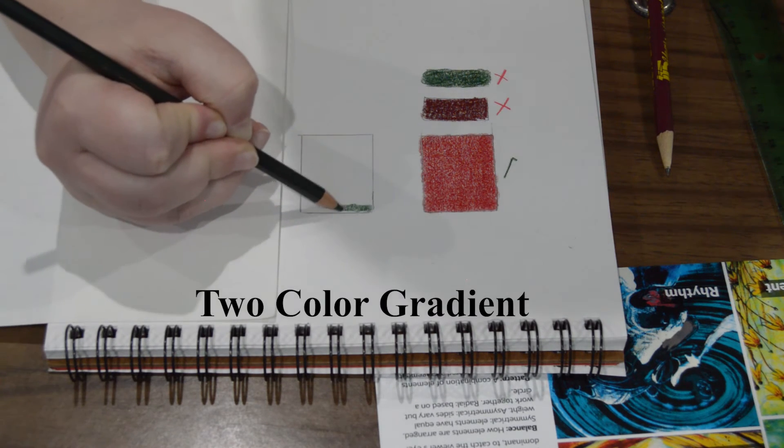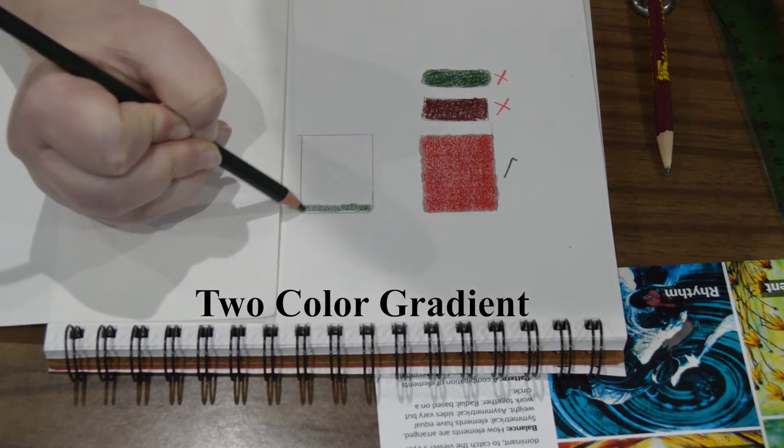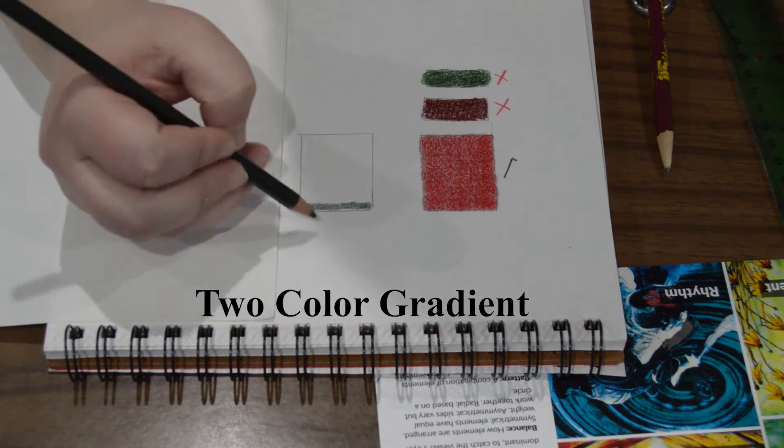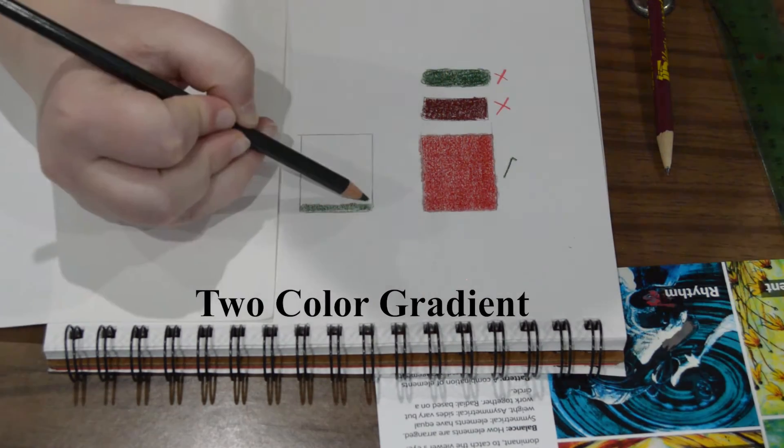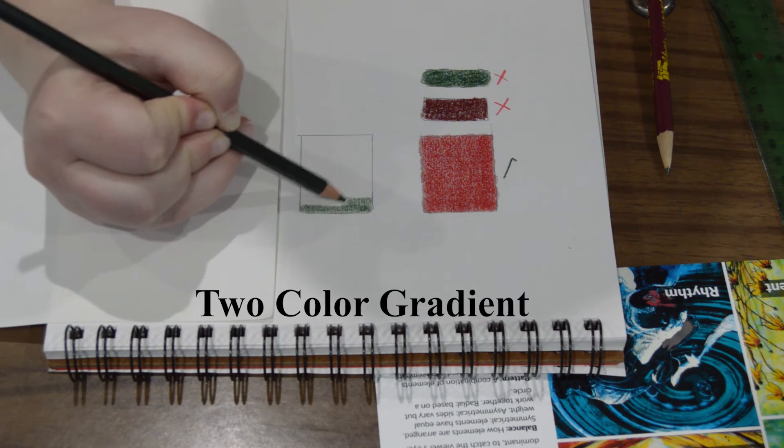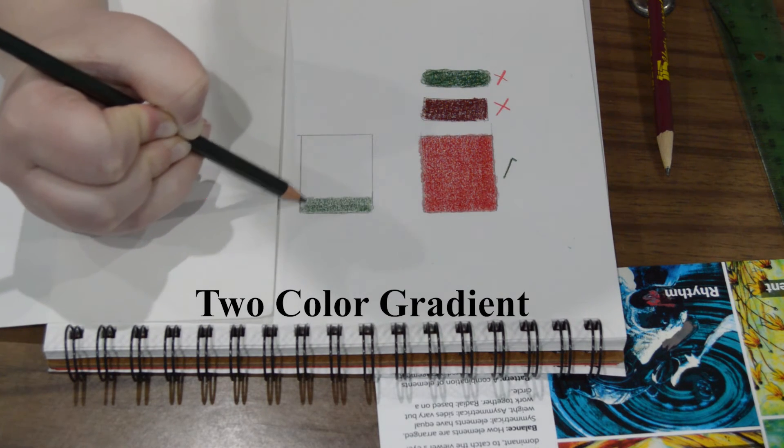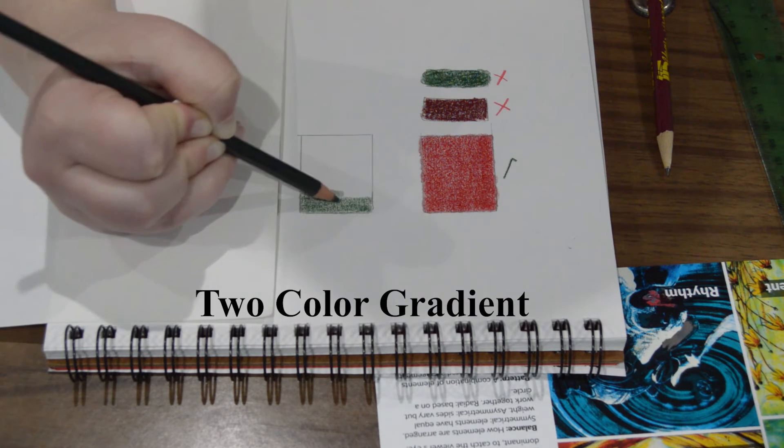For the two color gradient we're going to do the same steps as the one color gradient. I placed a piece of scrap paper on the places that I didn't want to accidentally smudge.